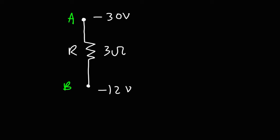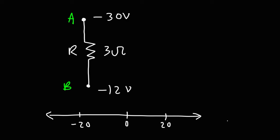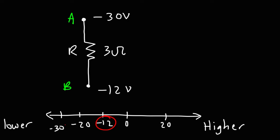So let's begin by determining the direction of the current flow. Which potential is higher — A or B? Which value is higher: negative 30 or negative 12? We can use a number line to determine the answer. On a number line, values to the right are higher than values to the left. Negative 12 is to the right of negative 30, so negative 12 is higher. Therefore, point B has a higher electric potential than point A, and current is going to flow from a high electric potential to a low electric potential — so it flows from point B to point A in this example.